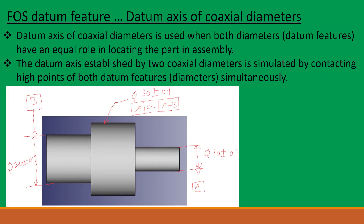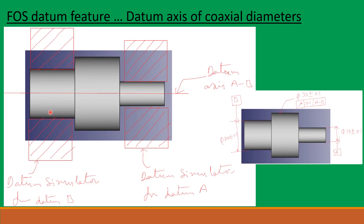FOS Datum Feature: Datum Axis of Coaxial Diameters. Datum axis of coaxial diameters is used when both diameters have an equal role in locating the part in assembly. The datum axis established by two coaxial diameters is simulated by contacting the high points of both datum features, that is both diameters, simultaneously. Here in this picture, this diameter is specified as datum A and this one as datum B. This diameter is specified with a geometric tolerance of runout 0.1 A to B. These two diameters are held in gauge elements and the simulated axis is called datum axis A to B.